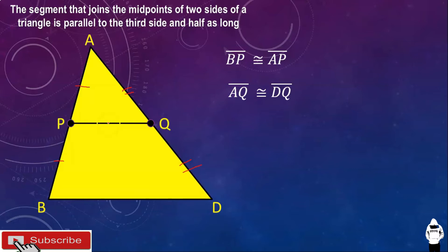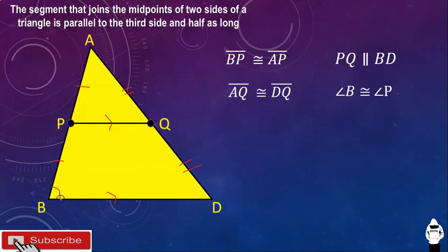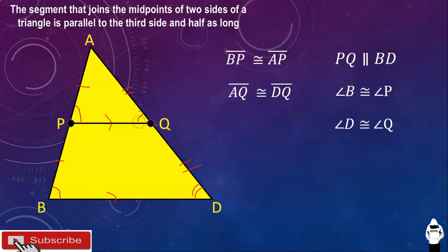This line PQ is parallel to BD. I'd like to add: angle B is congruent to angle P. If you recall parallel lines cut by a transversal, these angles are corresponding angles and they are congruent. Similarly, angle D is congruent to angle Q.